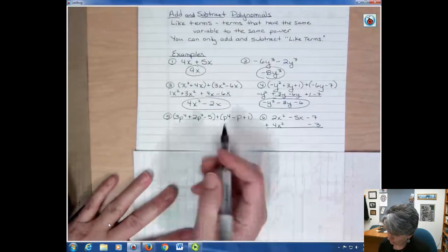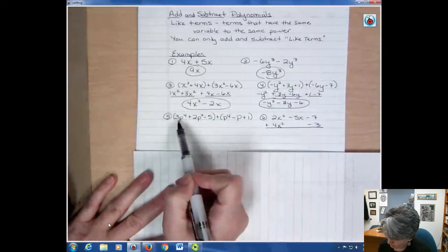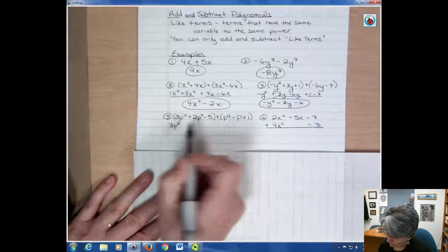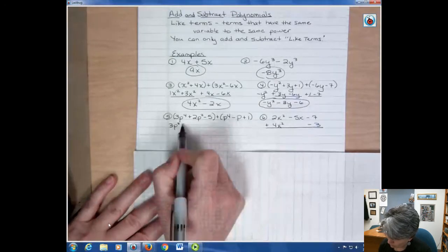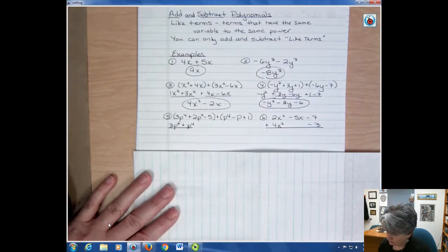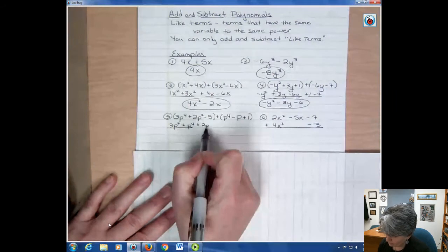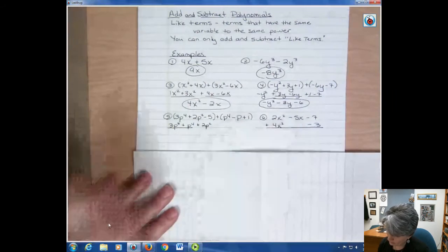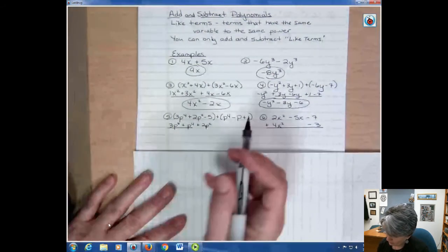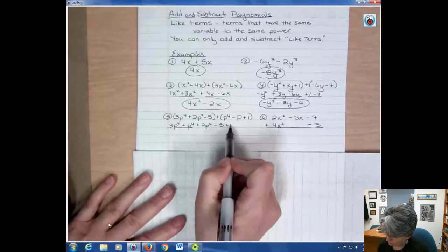I'm going to add these together. I can see I have three p to the fourth and then I'm going to come over here. The other term I have is another p to the fourth, so those I can add together because they're like terms. The next one I have is two p squared, and I don't have any other p squared there, so I can't add anything to that. Then I have a minus five and I have a plus one—those two can go together.